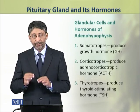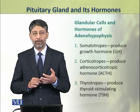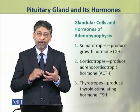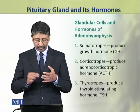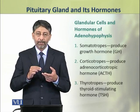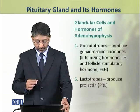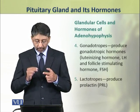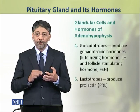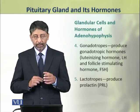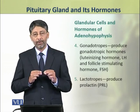These 5 types of cells include: 1. Somatotropes, which produce growth hormone. 2. Corticotropes, which produce adrenocorticotropic hormone (ACTH). 3. Thyrotropes, which produce thyroid stimulating hormone (TSH). 4. Gonadotropes, which produce gonadotropic hormones — luteinizing hormone (LH) and follicle stimulating hormone (FSH). 5. Lactotropes, which produce prolactin.